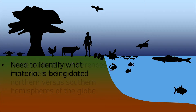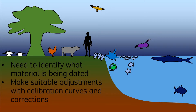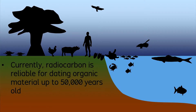In any case, you need to know what material is being used for a radiocarbon date. As long as you know the material, then you can make the adjustments and calibrations suitable for the source of carbon in the sample. Currently, radiocarbon dating is reliable for organic materials up to 50,000 years old.